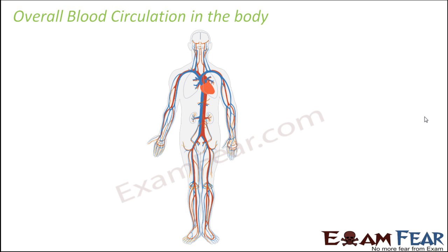This is the overall circulation of blood in our body. When we breathe in, oxygen reaches the lungs. The lungs send the oxygenated blood to the heart. The oxygenated blood reaches the auricles — from the left auricle, the oxygenated blood moves into the left ventricle, and from the left ventricle it moves to the different parts of the body.